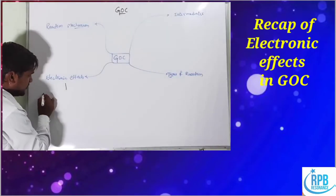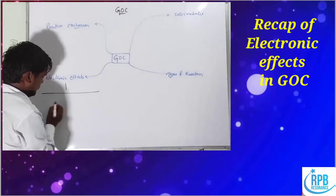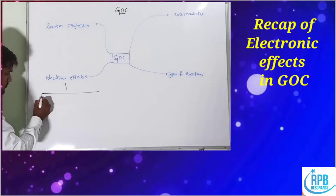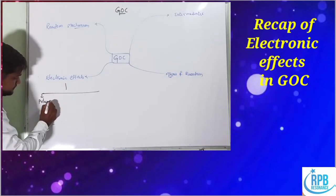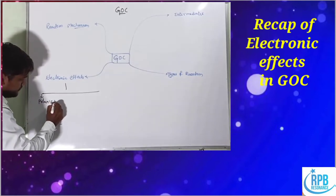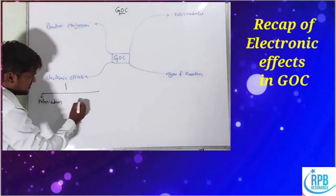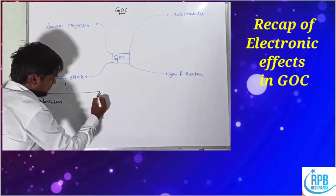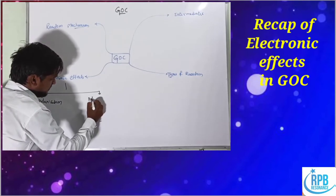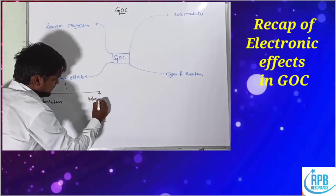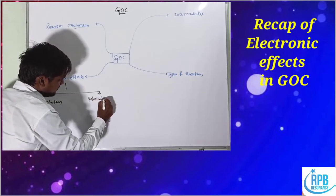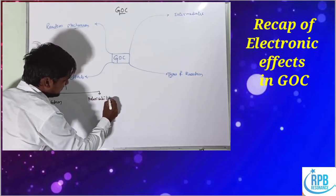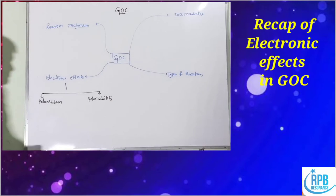Electronic effects are of two types. One is the polarization effect, and another one is the polarizability effect.